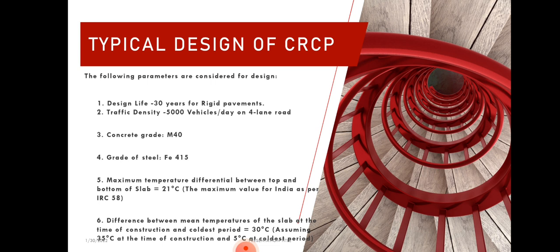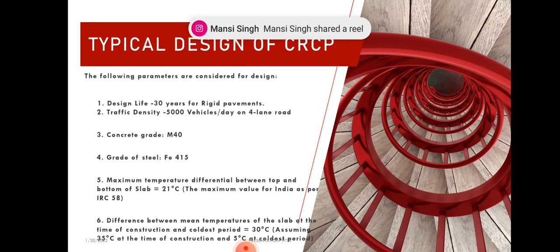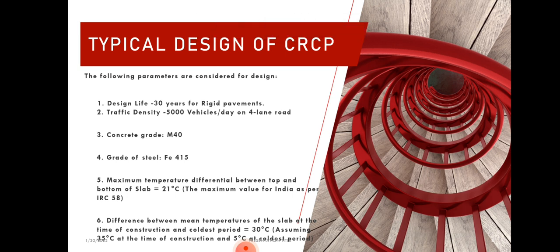The maximum temperature difference between the top and bottom of the slab is 21°C, which is the maximum value per IRC 58. The difference between the mean temperature of the slab at the time of construction and the coolest period is equal to 30°C. For example, if the temperature during construction is 35°C and the coolest temperature on that area is 5°C, the temperature difference is 30°C — this is the maximum difference allowed in the design of the concrete pavement.